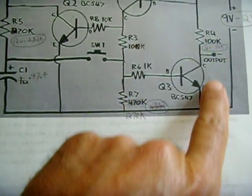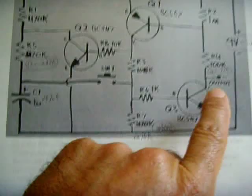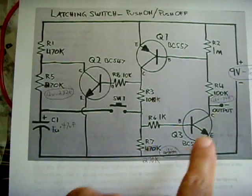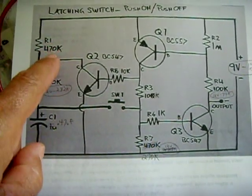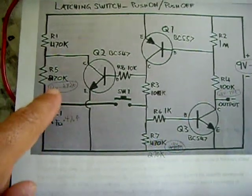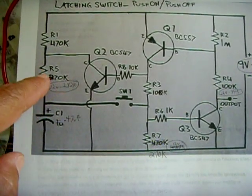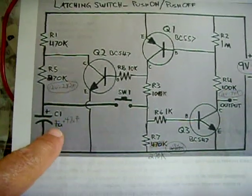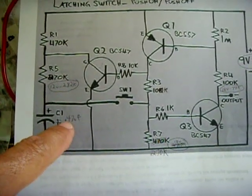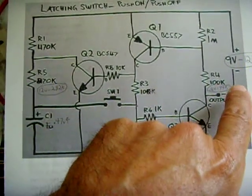This 100k stays the same. All right, the values that changed: the 470 stays the same. I lowered this from 470 to 270. I lowered the capacitor value down to .47. I'm running it on 12 volts.